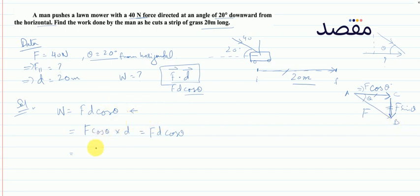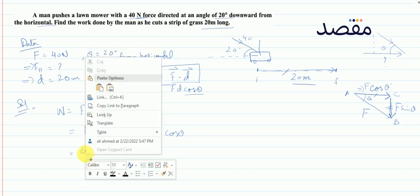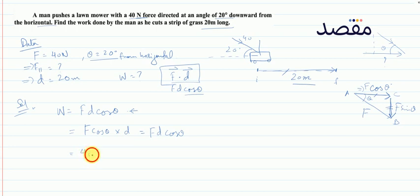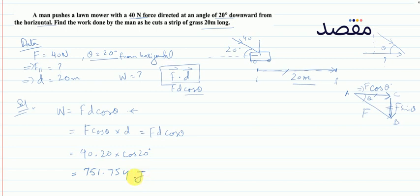θ = 20 degrees, F = 40 newton, d = 20 meters। W = 40 × 20 × cos(20°)। इसको solve करने पर answer आता है 751.75 joules।